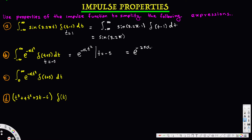Now for this expression, the impulse is again located at t equals negative 5. However, the limits of integration are 0 to infinity, and negative 5 is not within that range. When the impulse location is outside the range of integration, the result is equal to zero.